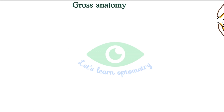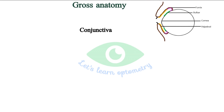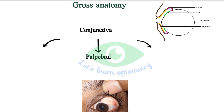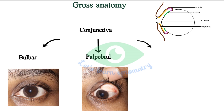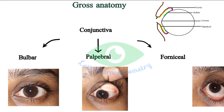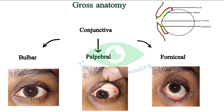Beginning with the gross anatomy of conjunctiva, it is divided into three parts: the palpebral conjunctiva, which lines the eyelids (shown in yellow); the bulbar conjunctiva, which lines the anterior eyeball surface except the cornea (shown in green); and the fornicial conjunctiva or fornix, which joins the palpebral and bulbar conjunctiva (shown in purple). We will see each one in detail.